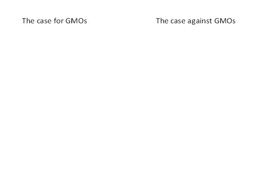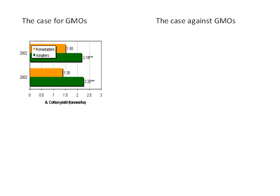What makes genetically modified crops a good idea according to their proponents? Well, the first and biggest argument they make is increased yield. Under the right conditions, GMOs have the potential to increase your yield per acre — the amount of crop that you're able to get from your fields.